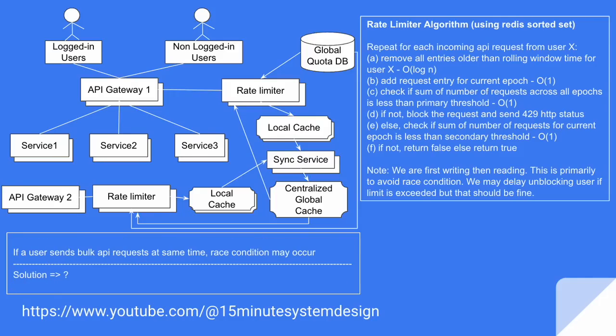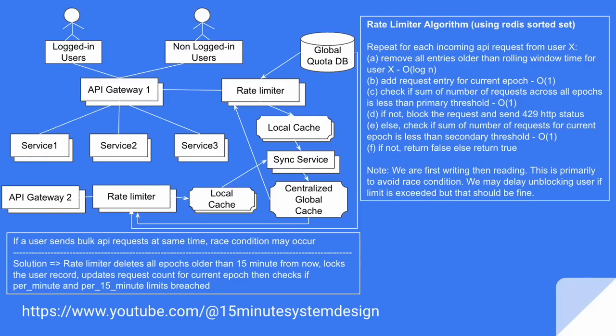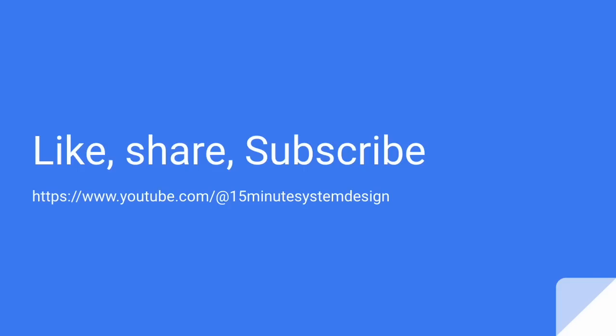If a user sends bulk API requests at the same time, the rate limiter will delete all epochs older than 15 minutes, keep a lock, and do write first then read — as we discussed. That's how we have designed a distributed rate limiter. If you liked the video, please like, share, and subscribe. Thank you.